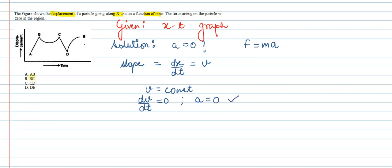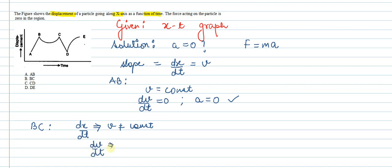Now let's talk about region BC. BC is a curved line. For BC, if we calculate dx/dt, the velocity V will not be constant — it will be a variable. So if we do dv/dt, the acceleration will not be equal to zero. Therefore, we can say that the force in this case will not be zero.